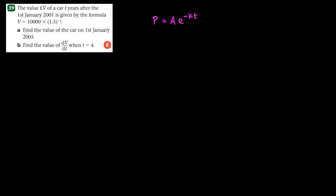We have to find the value of the car on 1st January 2005. Now 1st January 2001 is the beginning value, meaning t equals to 0 at that point. So t equals to 0 at 1st January 2001, t equals to 1 is 1st January 2002, then 2003, 2004, then 2005 — so t equals to 1, 2, 3, 4. It is clear that at 1st January 2005, t equals to 4.